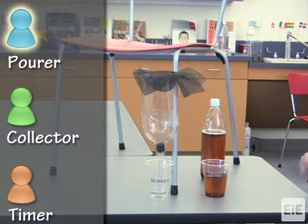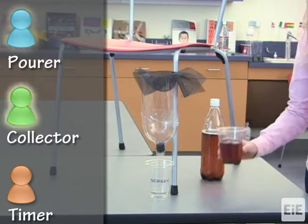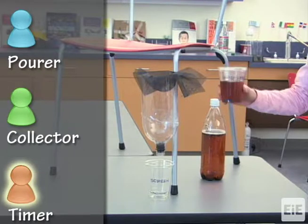The pourer in each group should be ready to empty their contaminated water cup into the filter holder. The collectors should be ready to observe and announce precisely when the filtered water reaches the line on the collection cup. The timers should be ready to count the seconds between when you start the test and when the filtered water has reached the marked line.